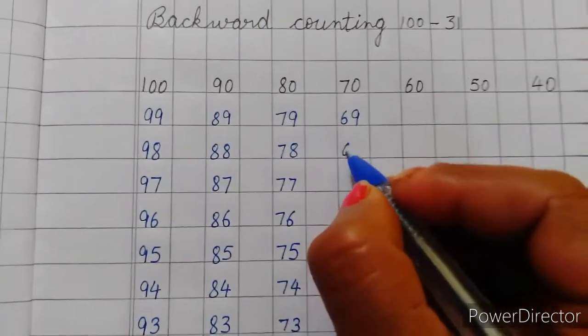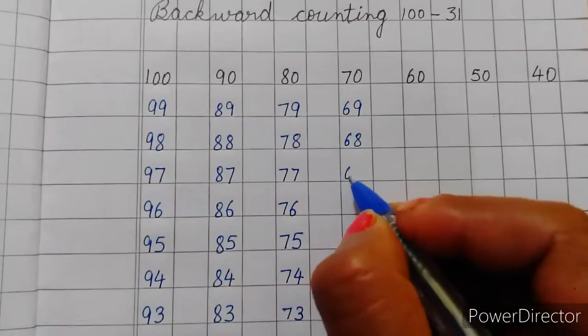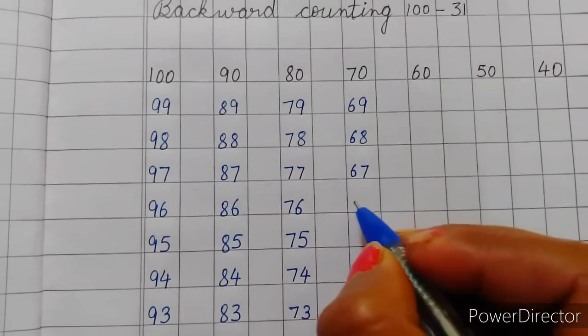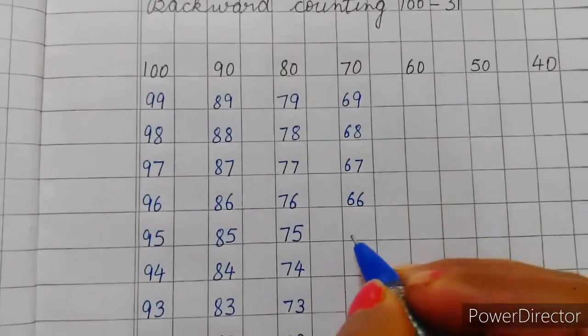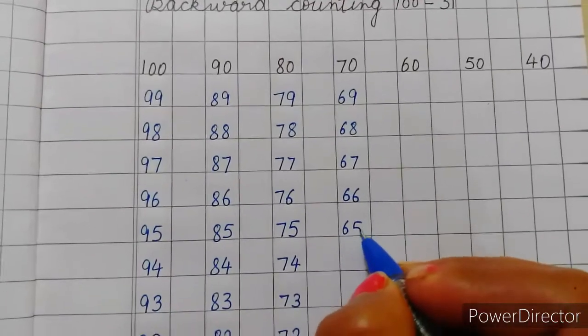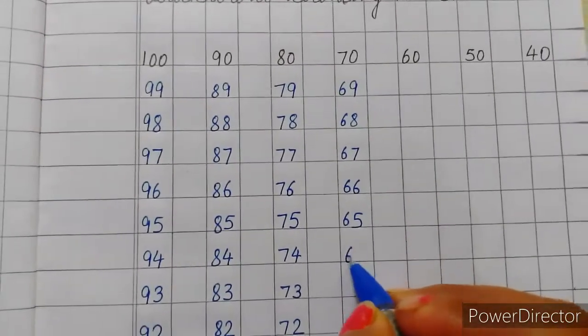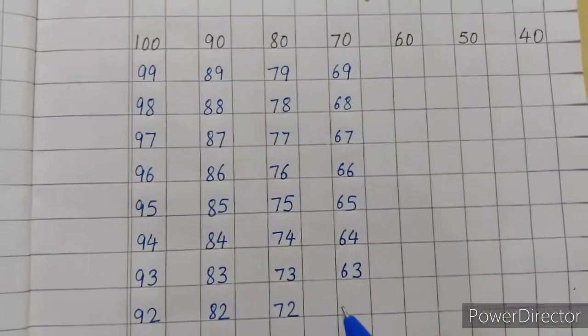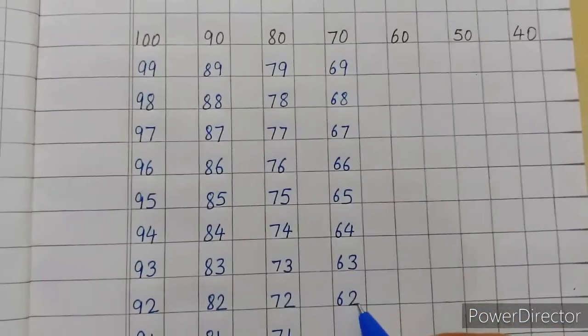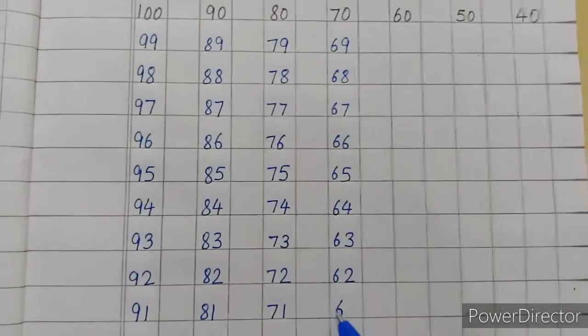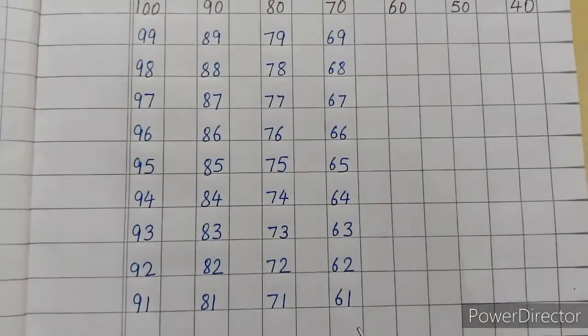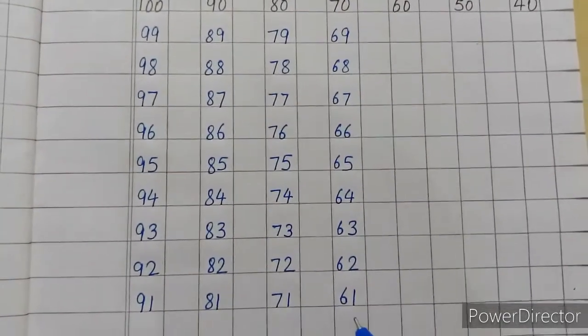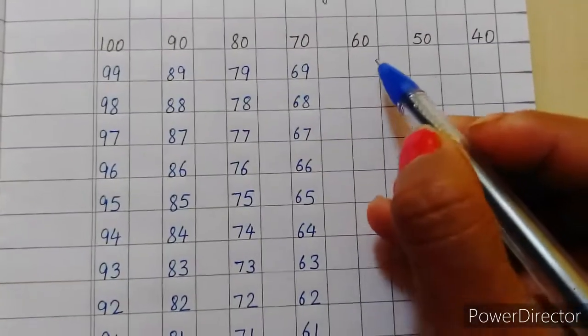69, 69, 68, 67, 67, 66, 66, 65, 65, 64, 64, 63, 63, 62, 62, 61, 61. Abhi counting bol ke dekho jara, 61, 61. To yahan par hai 60, 60, 60.